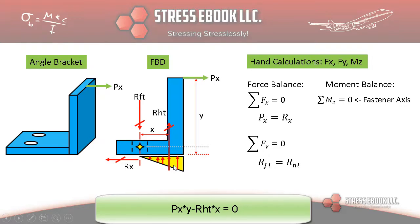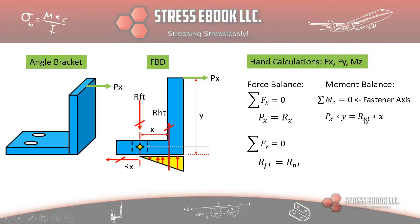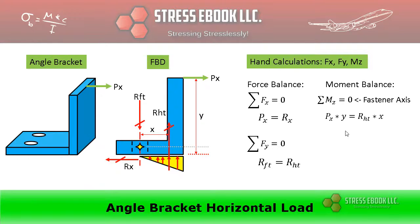So that's what balances the moment applied due to PX times Y. So we're going to do PX times Y equals RHT times X. Therefore RHT is equal to PX times Y divided by X, which again is the same as RFT as we have already concluded using our Sigma FY equal to zero equilibrium equation.